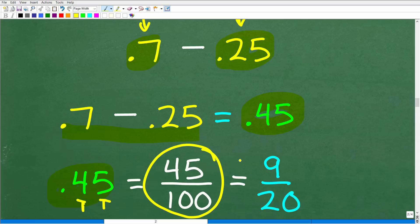45 over 100, we can reduce. 5 goes into 45 nine times, and 5 goes into 100 twenty times. So there you go. There is our answer, again, 9 over 20.